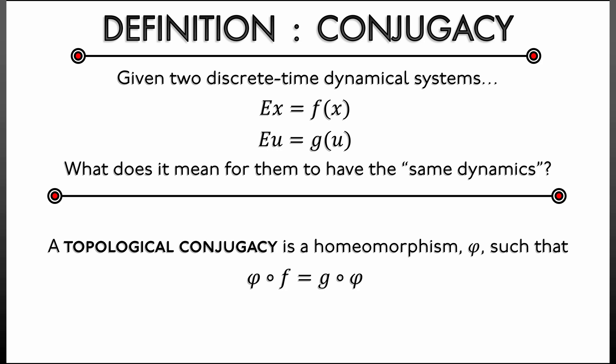exists, then we say that the dynamics are topologically conjugate. And the way we think about that is that it's really the same dynamics. Now why is that? Why is this definition the way it is? φ ∘ f = g ∘ φ.